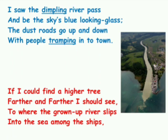And what else does he see? I saw the dimpling river pass and be the sky's blue looking glass. The dust roads go up and down with people tramping into town. That means the poet says that the deep rivers are like a mirror for the sky, and he also watches people walking on the dusty roads.